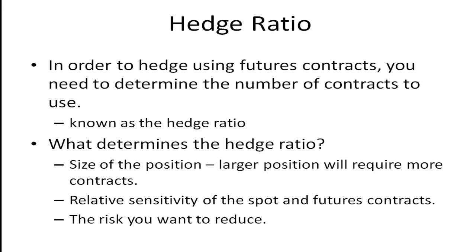For example, going back to our insurance example, someone that owns a $200,000 house isn't going to need as much homeowners insurance as somebody who owns a million-dollar house. It's a bigger position — the loss is going to be greater economically, so you need a bigger position. Someone who makes more money is going to need more life insurance than someone who makes less money, unless they have so much money they don't need life insurance at all. Bill Gates doesn't need life insurance — his family is not going to be in a bad financial position should Bill pass away.